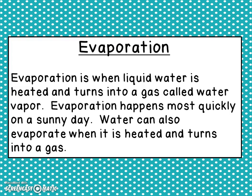The first step of the water cycle is called evaporation. Evaporation is when liquid water is heated and turns into a gas called water vapor. Evaporation happens most quickly on a sunny day — that's why you see a puddle and when the sun comes out, the puddle starts to disappear. Water can also evaporate when it is heated and turns into a gas.